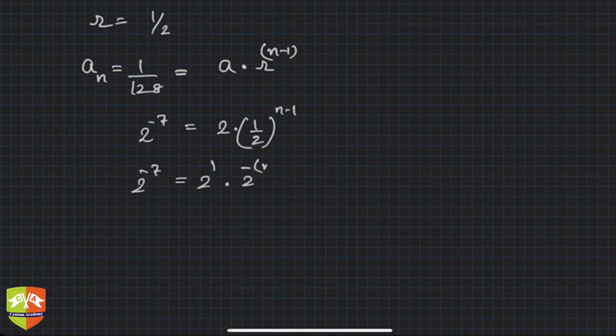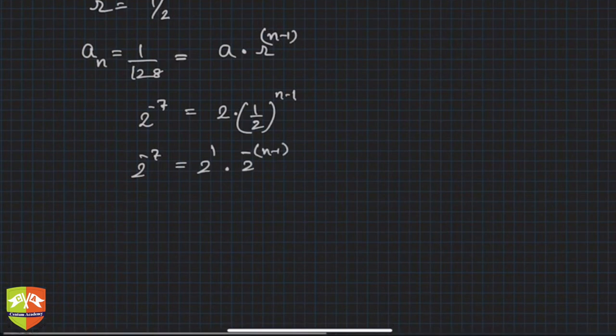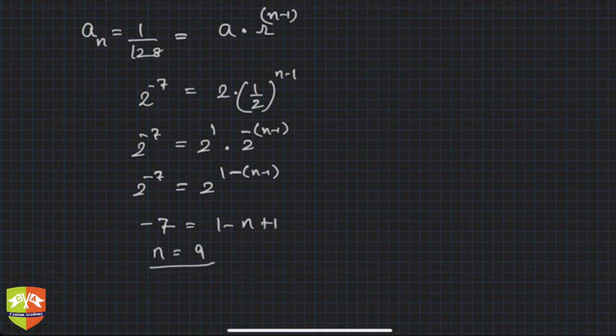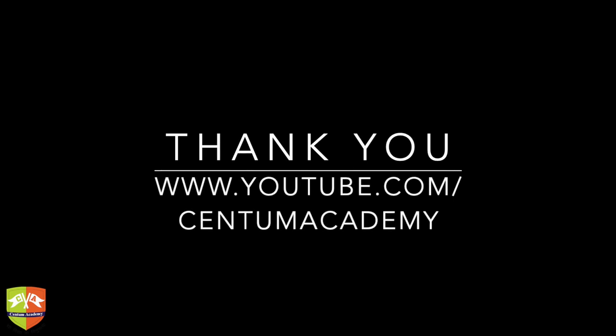2^(-7) is equal to 2^(1-n+1), which is 2^(2-n). That means -7 is equal to 1 minus n plus 1, that means n is equal to 9. Thank you.